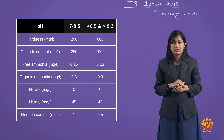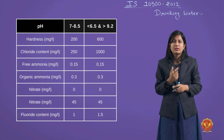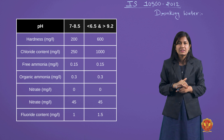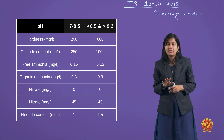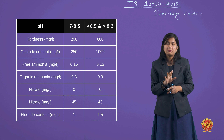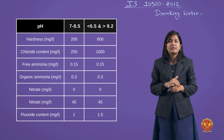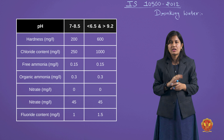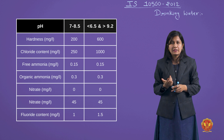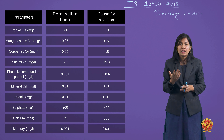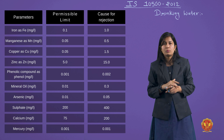Free ammonia की permissible limit 0.15 mg/L होती है — 0.15 से बढ़ जाए तो cause of rejection। Organic ammonia की permissible limit 0.3 mg/L है — exceed कर गए तो cause of rejection। Nitrites की permissible limit 0 होती है — पानी में nitrites नहीं होने चाहिए, इसलिए permissible और cause of rejection दोनों 0 हैं। Nitrates की permissible limit 45 mg/L है, और 45 से exceed होने पर cause of rejection। Fluoride की permissible limit 1 PPM और cause of rejection 1.5 PPM।